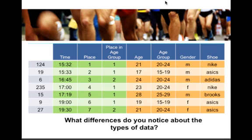Let's start by looking at some differences you notice about the different columns of data. Looking across from time to place to gender, age, age group, and shoe type — we see that gender and shoe type are really just types or categories, compared to something like time where we know exactly how long it took someone to finish. We know that if it took someone 30 minutes to finish, it took them twice as long as if it took them 15 minutes. We know that 21 minutes is a minute longer than 20 minutes, so we know relative distances.